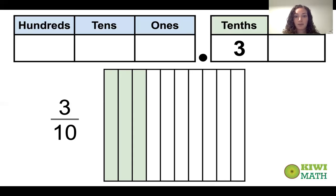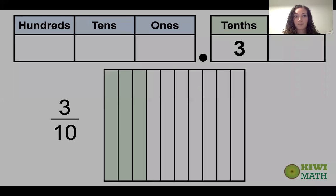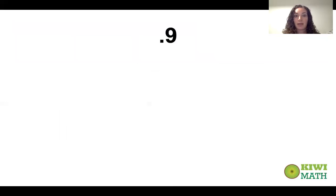Making sense so far? Now, what if we get rid of the place value chart? Let's just imagine the place value chart but not use it right now. Consider 0.9 — let's think about 0.9.